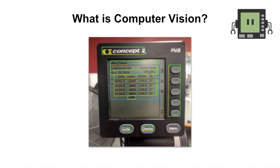So what is computer vision? Computer vision is processing images for information — in this case, the numerical data that the ERG reports back to you.